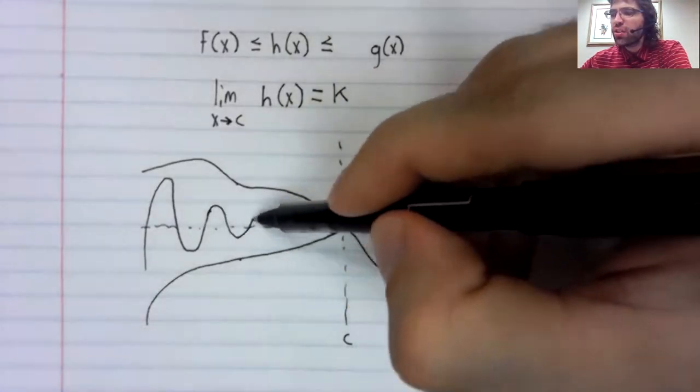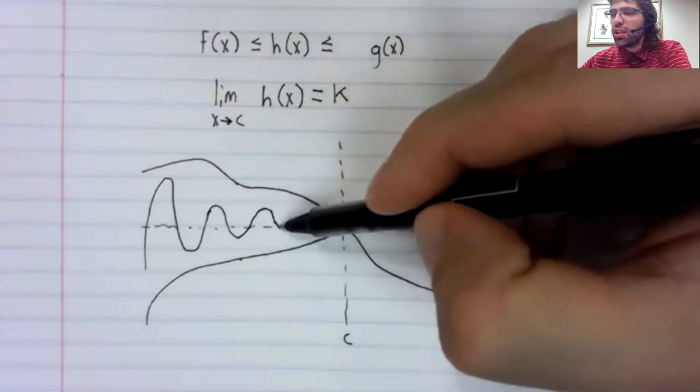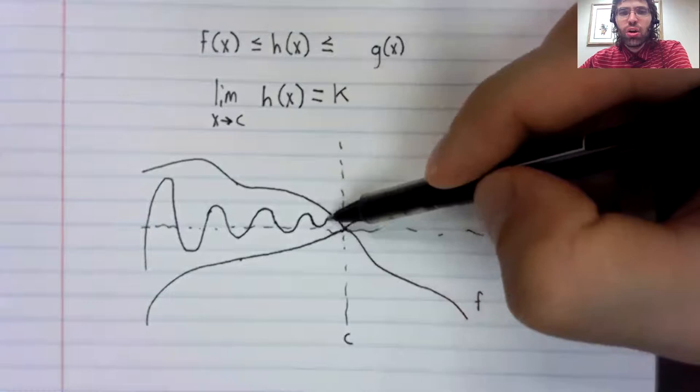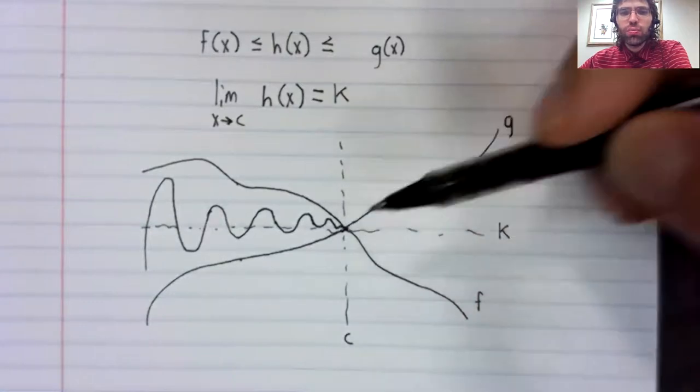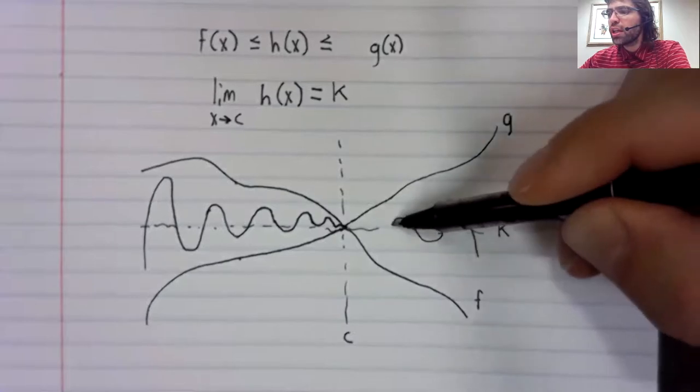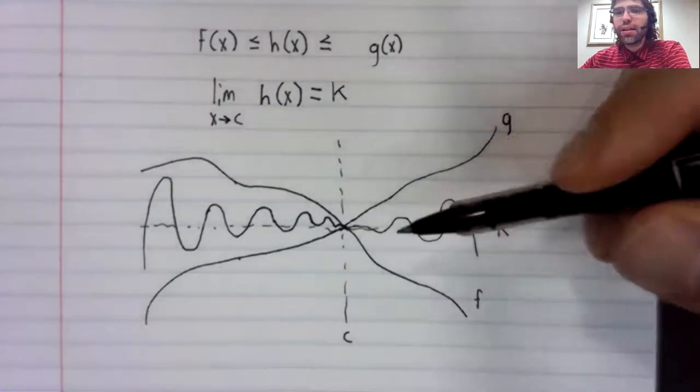So as X approaches C, this function also has to be approaching K.